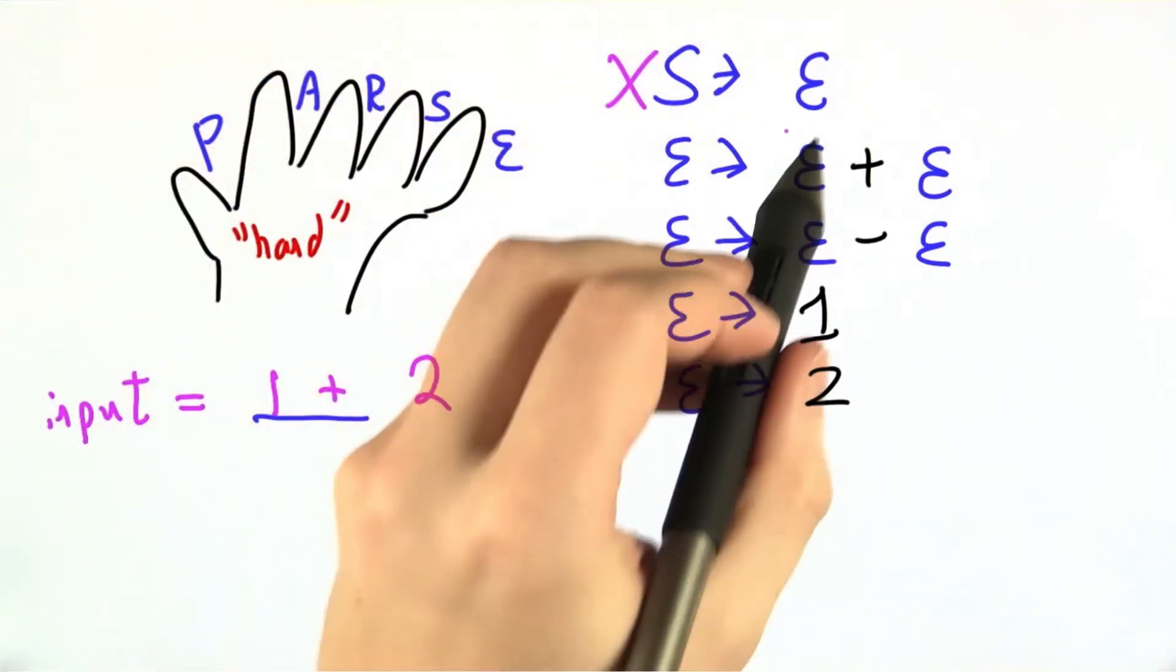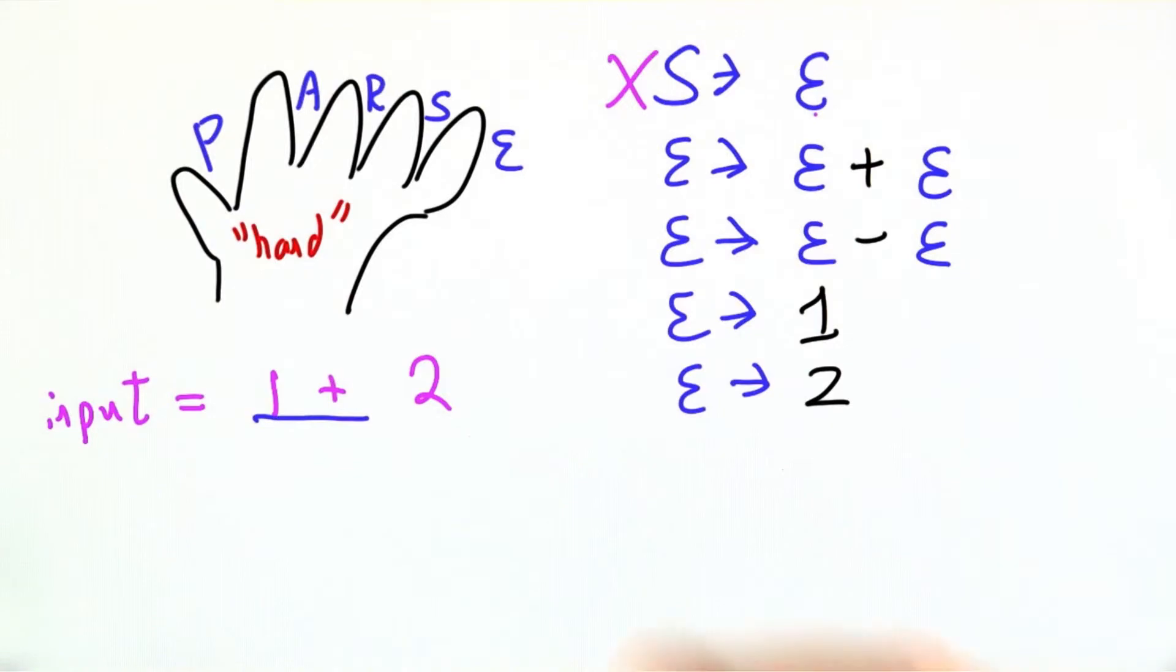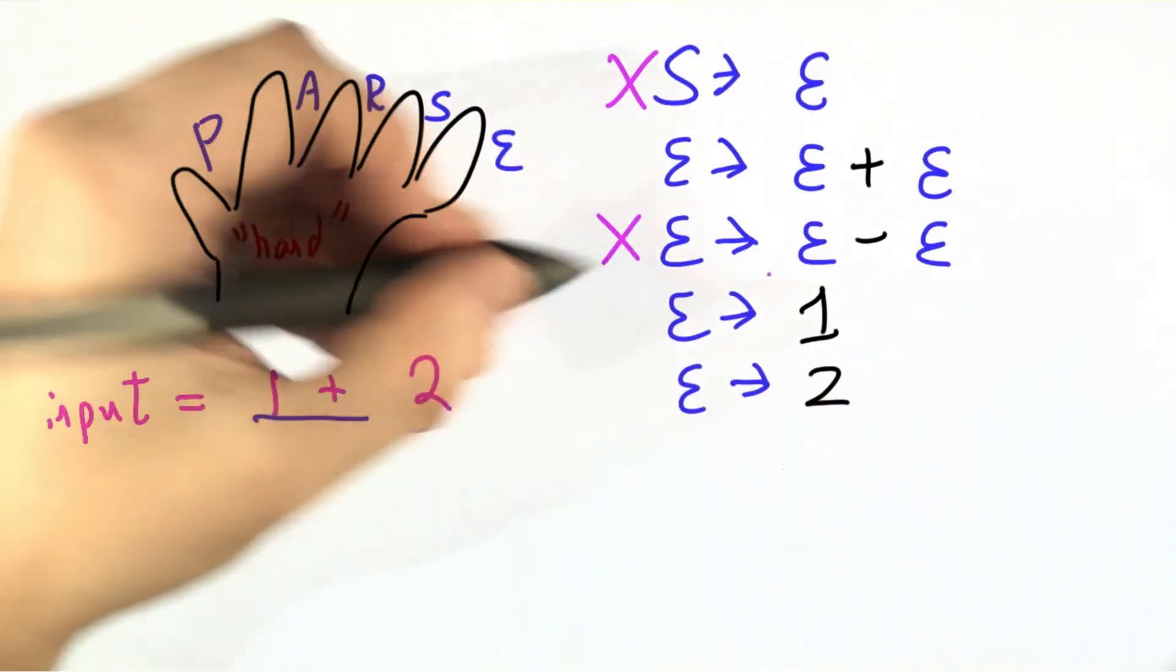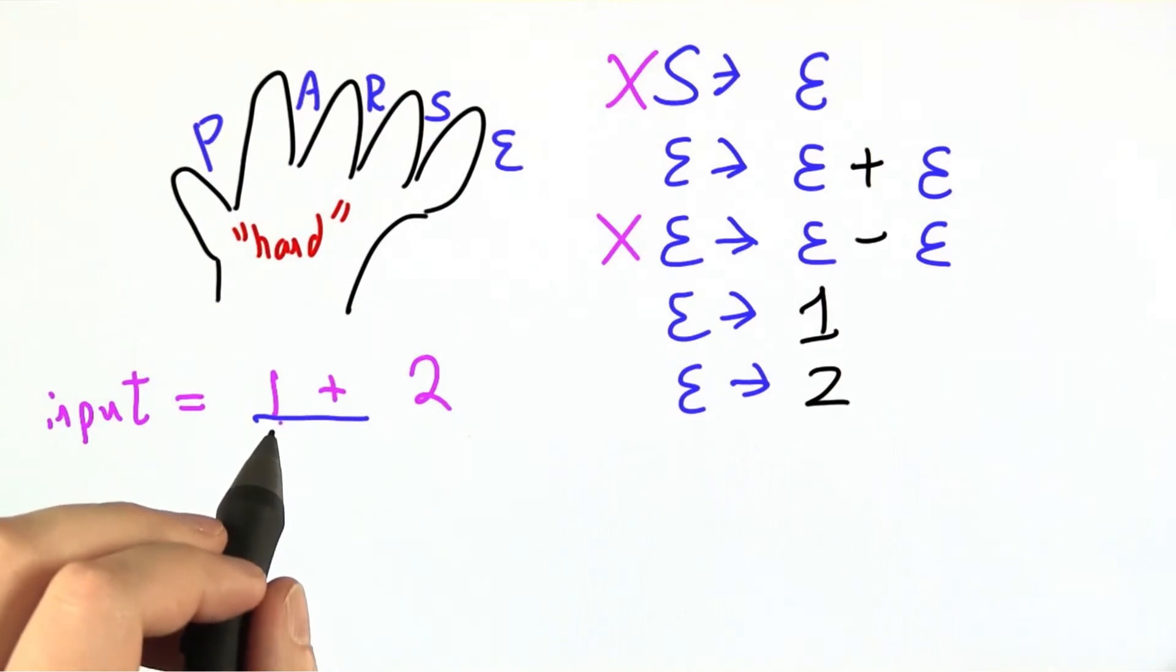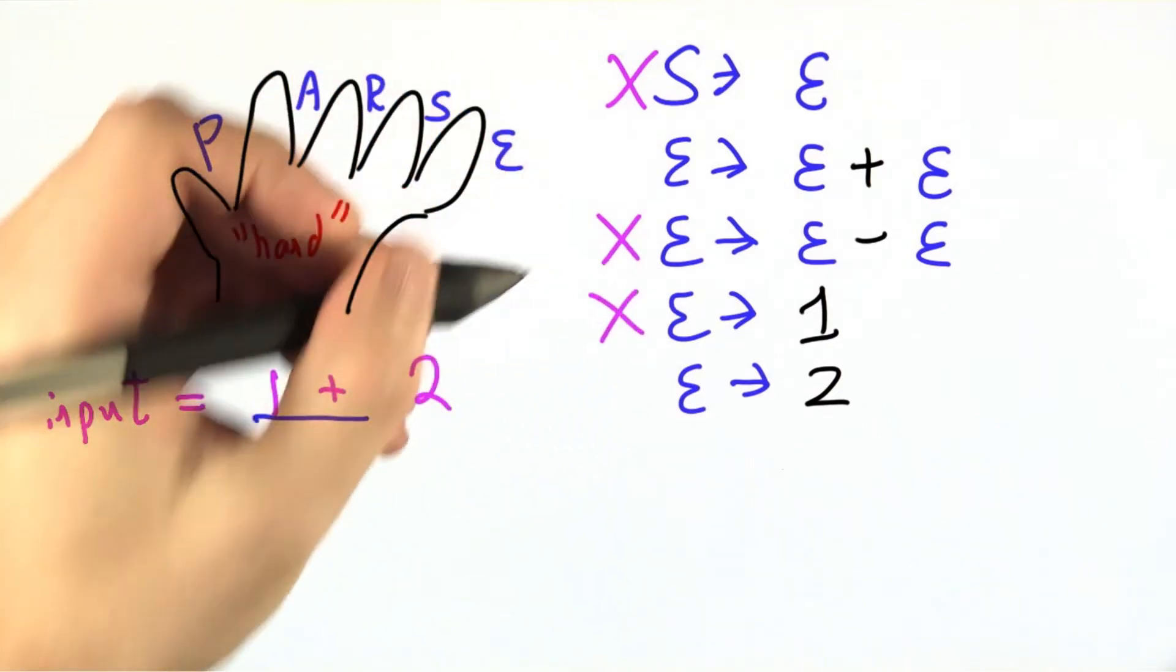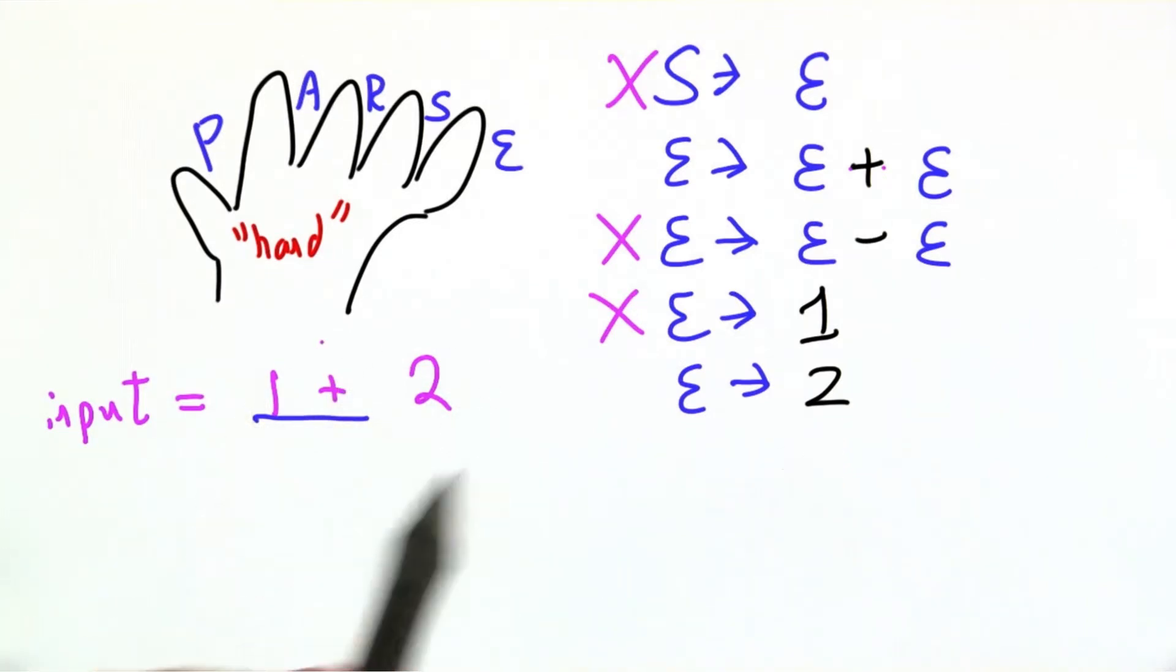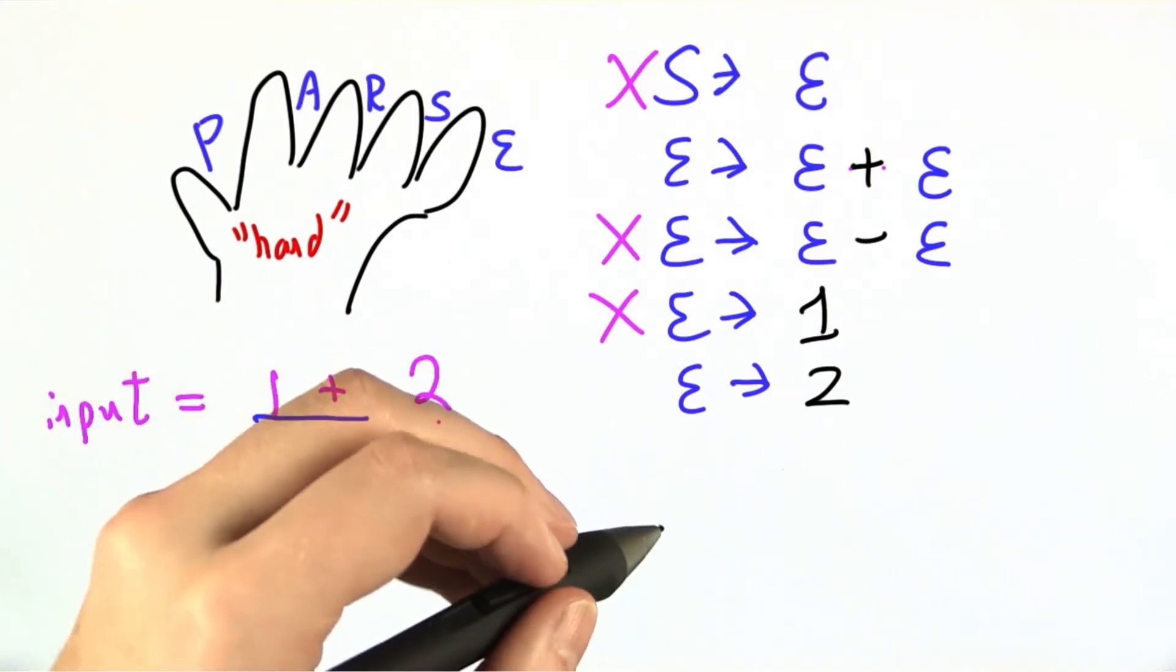For example, s goes to e, that doesn't seem particularly relevant. A minus sign, that doesn't seem particularly relevant. e goes to one, if we've already seen the one and the plus, we're kind of past that. But these two, e plus e and two, that's kind of where the action is. That's where we are now in some strong sense.